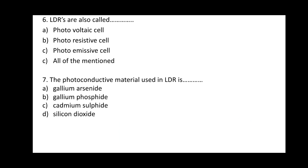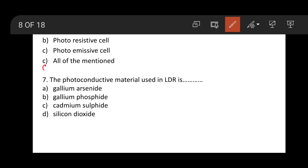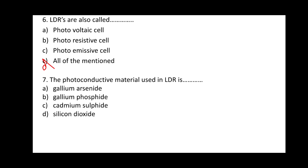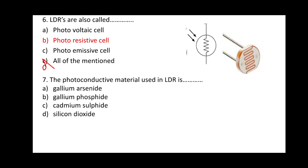Question 6: LDR are also called? The full name is light dependent resistor. Options: A) Photovoltaic cell, B) Photo resistive cell, C) Photoemissive cell, D) All of the mentioned. The correct option is B, photo resistive cell.